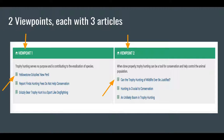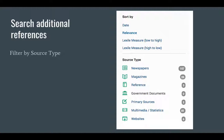It will give you two viewpoints, each with three articles — usually a pro and a con. One is for the topic and one is against the topic, and they will have articles to support each viewpoint. You can also search for additional references and additional articles.